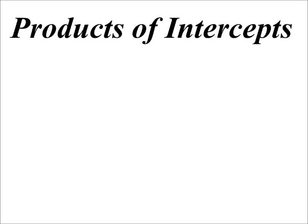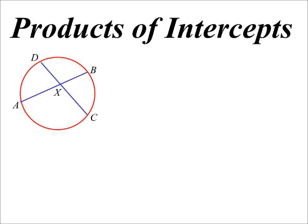Last of our circle geometry theorems. There are three different ones, but really they're all the same — this idea of the product of intercepts. The first one is when we have intersecting chords: AX times BX is equal to CX times DX.